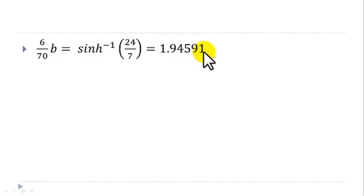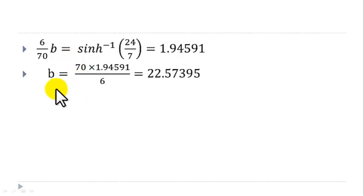We can then solve for b to obtain b equal to 70 times 1.94591 over 6, and that is equal to 22.57395.